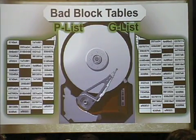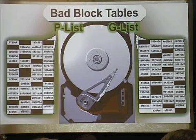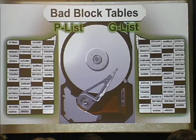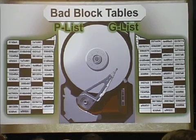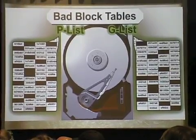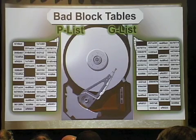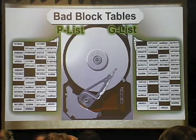In the bad block list, there's a PList — the permanent primary list. This is what the manufacturer created when they formatted the drive and marked these blocks as bad. They should have no data in them; they were the permanent list, so there shouldn't be any. There are ways to get data in there, but that's a different forensics matter. Then there's the GList — the grown list. As you're using your drive and sectors fill up, they get reallocated, and that's where the GList comes from.